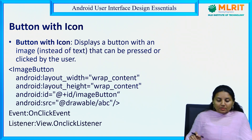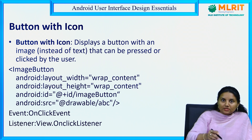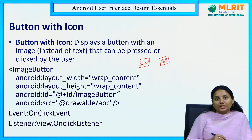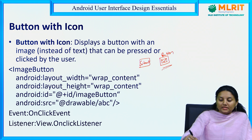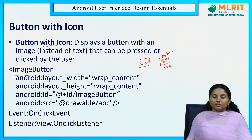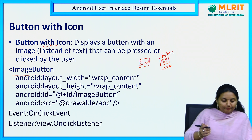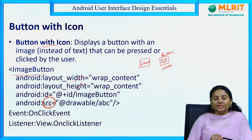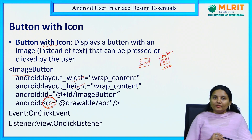Button with icon: suppose you want to display a button with an image instead of text. Normally we just give it a text like 'submit', but if you want to make an image act as a button that can be pressed or clicked by the user, we use the image button tag. Button with icon is simply a button using the ImageButton tag. Its properties are mostly similar — width, height, and id. Source is one mandatory field for image view, because image view has to access an image from another location using the source tag.